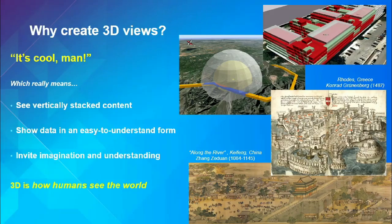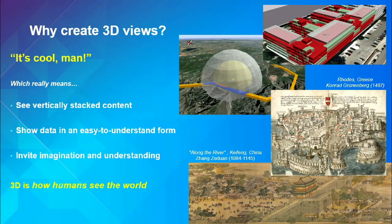3D also invites imagination and understanding. This is how people have been making maps forever — a city map from 1487, a city map of roads in Greece, was this 3D bird's eye view, all hand-drawn and artistic. The one below it is even older. It's China — a really long tapestry showing a village along a river. This is how we see the world. We look around and see things in 3D, and now we're starting to expect to see all of our content in 3D as well.